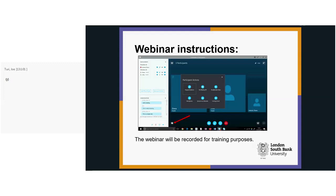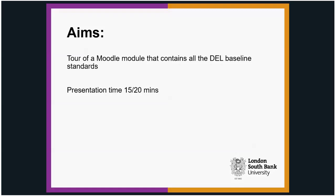So that's the instructions for how we're going to proceed. The aim of this session is really just one: I'm going to briefly outline what the Dell baseline is, and then take you into a Moodle module to show what the Dell baseline should look like — the essential minimum requirements that need to go into a Moodle module. I'll try to keep this down to about 15 or 20 minutes.